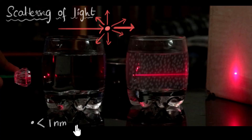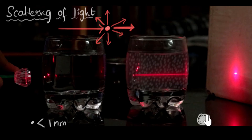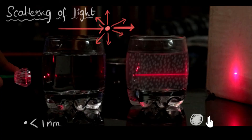But milk particles are way bigger than a nanometer — they could be around 60 to 200 nanometers in size. On the other hand, if the particles become too large — a rough value would be larger than about a thousand nanometers — then we also have a problem.